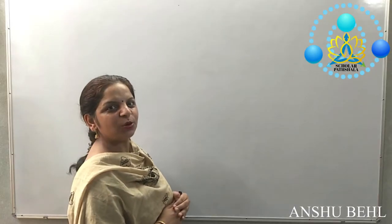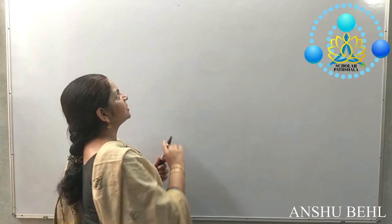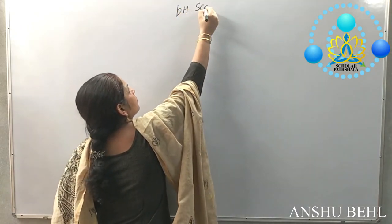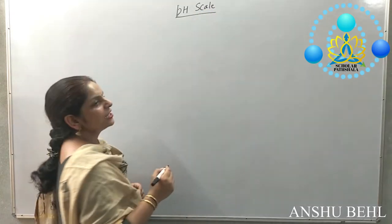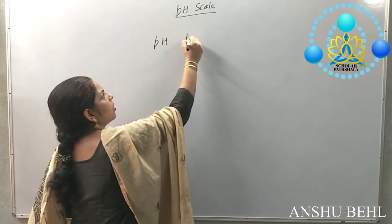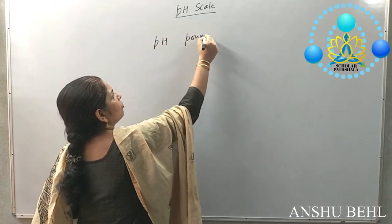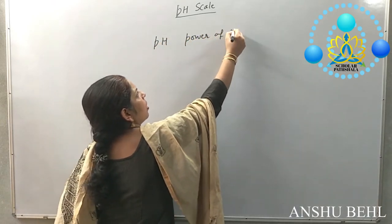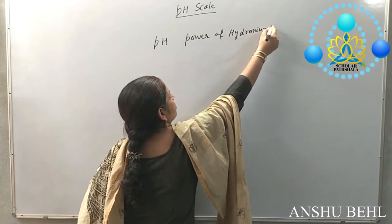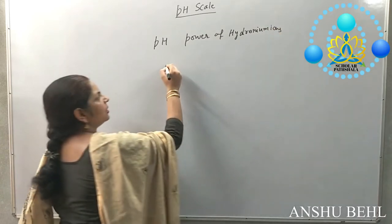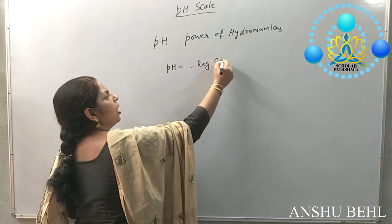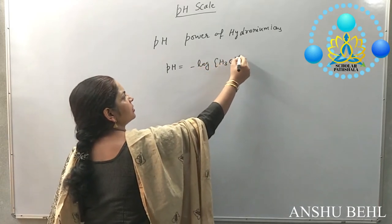Today we are going to start with the topic: pH scale. What does pH mean? pH means power of hydronium ions. It is written as: pH equals negative logarithm of hydronium ion concentration.